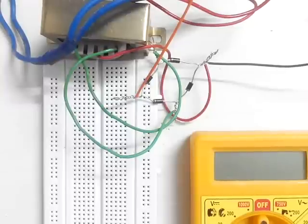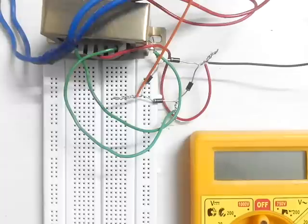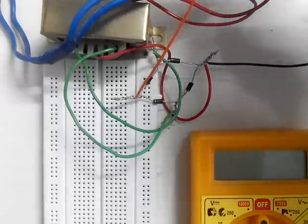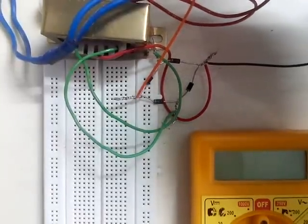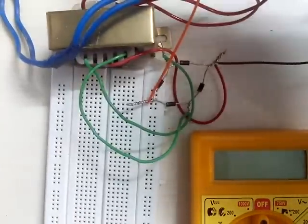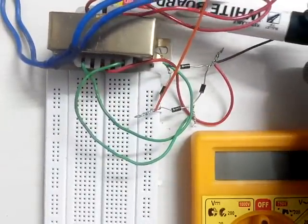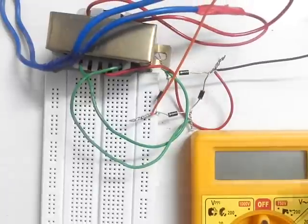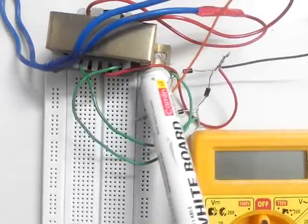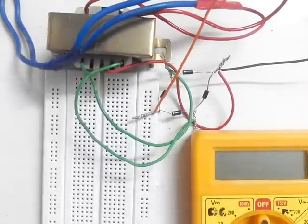Now we will study how to convert AC voltage into DC. Here we are doing it with the help of a transformer. This transformer is connected to the AC supply voltage.